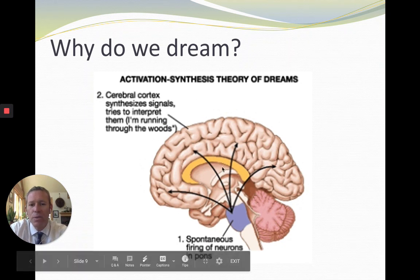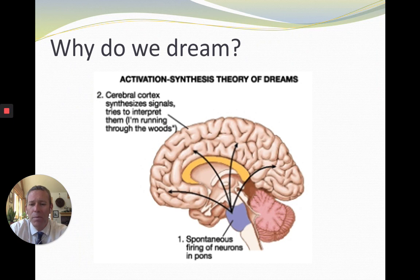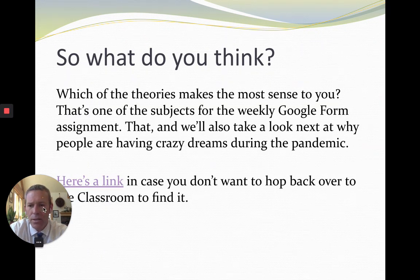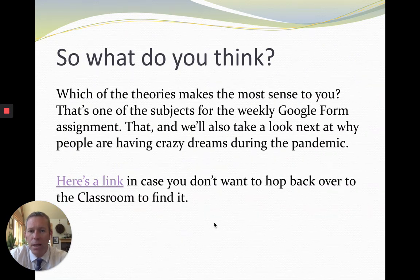That's it for this slideshow. Hopefully you have a little bit of understanding of the three main theories of dreaming, and we'll take that information in as we read the National Geographic article about why people are having such strange dreams during the coronavirus pandemic we're all experiencing right now. Take a look at that next — here's the link. If you're looking at the slideshow itself, you can link to it directly there, and it's also linked in Google Classroom. Thanks everybody, hopefully you're able to engage with this and have a great week. Talk to you later, bye-bye.